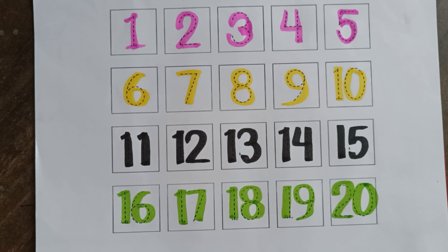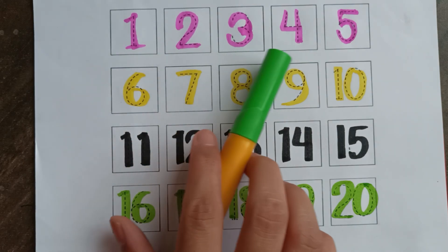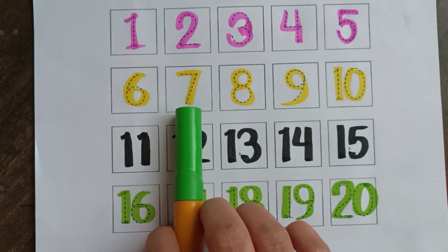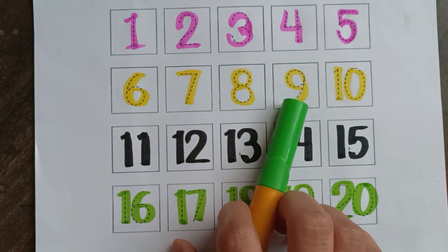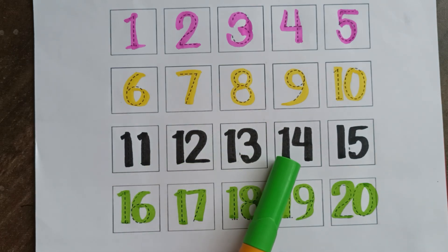Twenty. 1, 2, 3, 4, 5, 6, 7, 8, 9, and 10, 11, 12, 13, 14, 15, 16, 17, 18, 19, and 20.